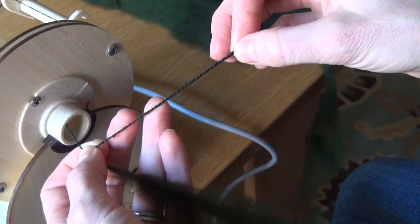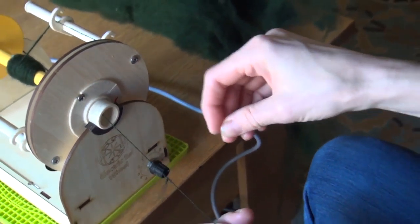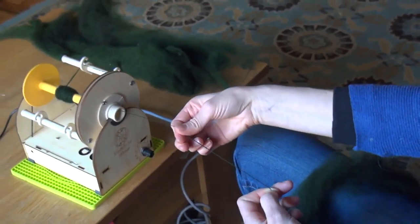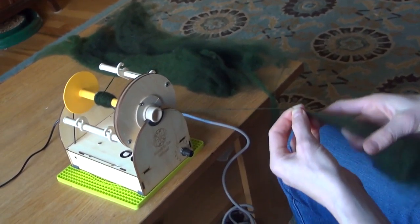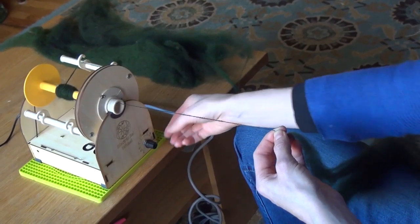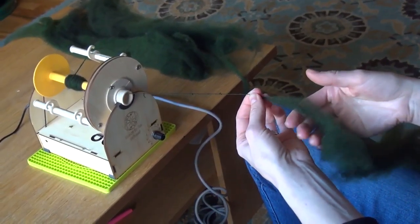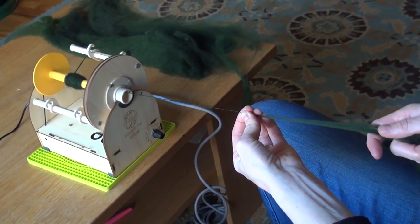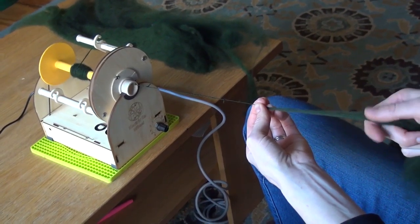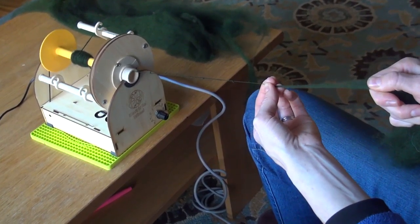One way to remedy this is you can slow it down, and you can also let some of that twist travel up your yarn. So pinch off where you want the twist to stop.